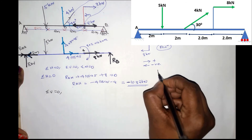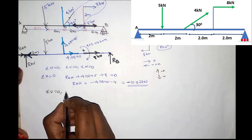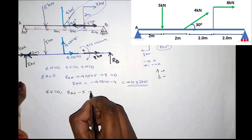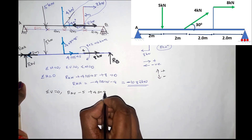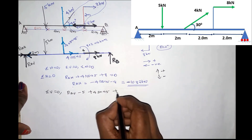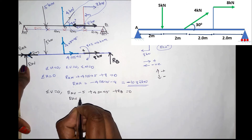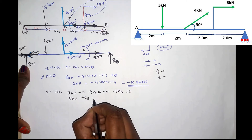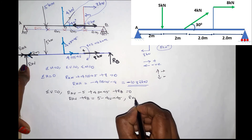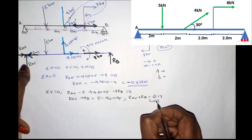Now using Sigma V equals zero, with upward positive and downward negative: RAV plus RB minus 4sin45 minus 5 equals zero. Therefore RAV plus RB equals 2.178 kN. This is our equation number 1.